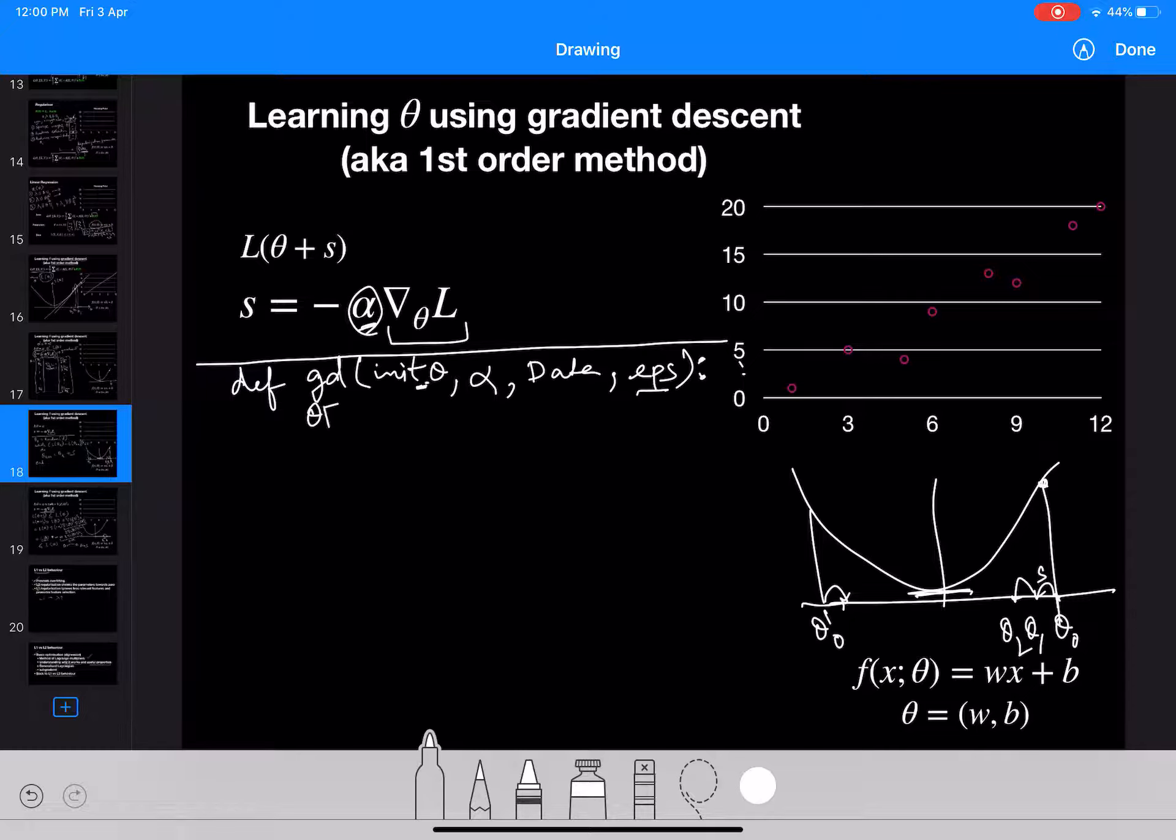So we initialize our theta zero with our initial theta. Just for tracking we have t equal to zero. Now we'll iterate over t while absolute value of L of